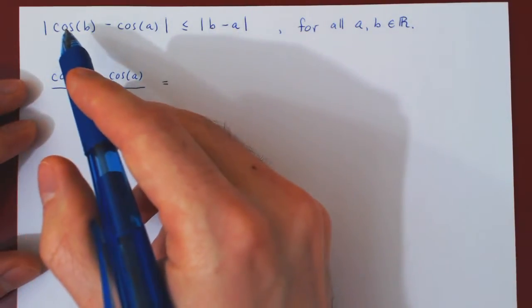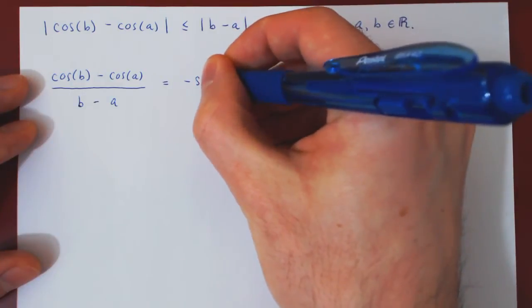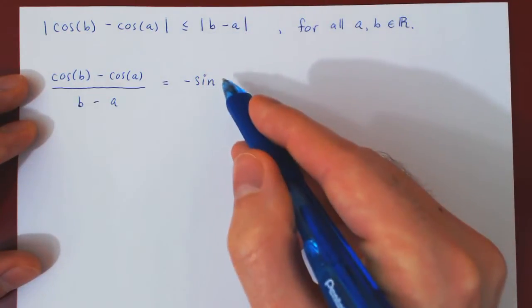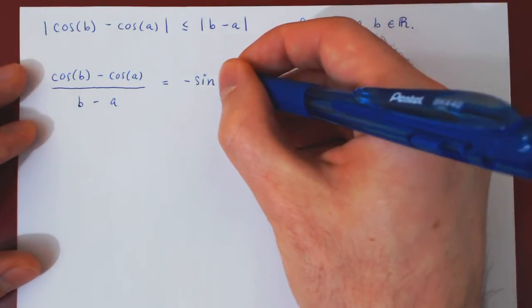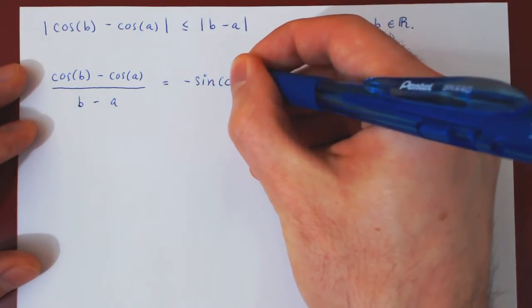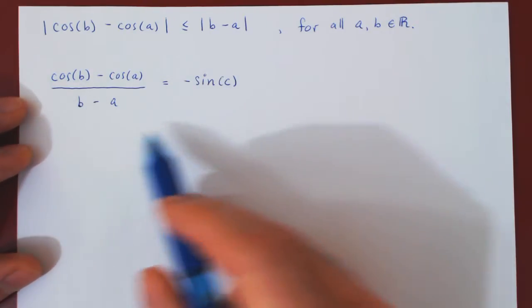Well, the derivative of cosine is negative sine, at which value? At some point between a and b. So call that point c. And this is directly from the mean value theorem.